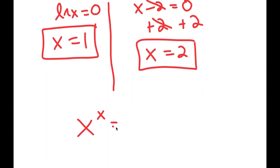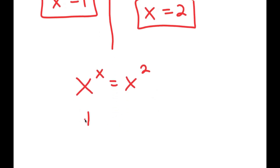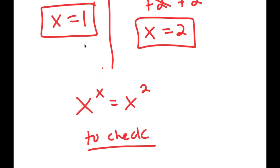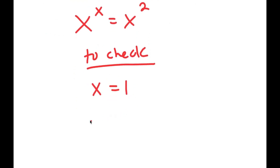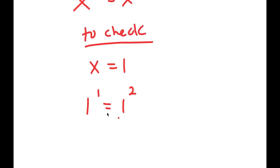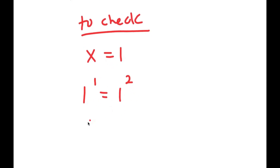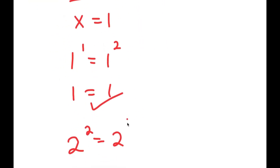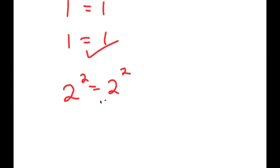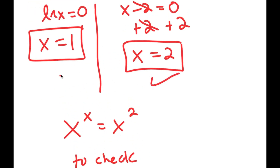Going back to the original equation, x to the power of x equals x to the power of 2. To check, I'll first plug in x equals 1: 1 to the power of 1 equals 1 to the power of 2 — both equal 1, so this is correct. Now plugging in x equals 2: 2 to the power of 2 equals 2 to the power of 2 — both equal 4, so this is correct as well. My two solutions are verified.